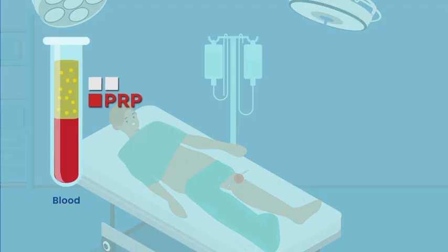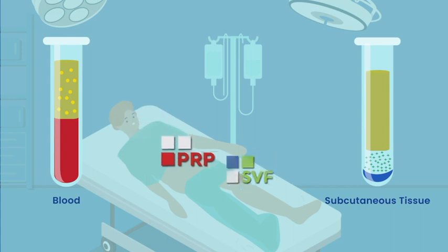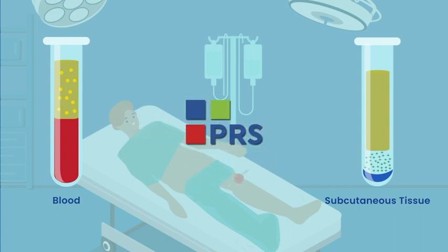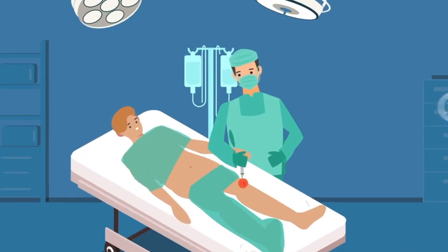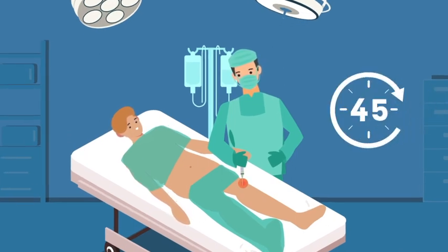PRP from blood plus stroma from subcutaneous tissue makes the repair system complete and is called platelet-rich stroma, in short PRS. Without any incisions, the doctor just has to inject PRS into the target zone, all within 45 minutes.